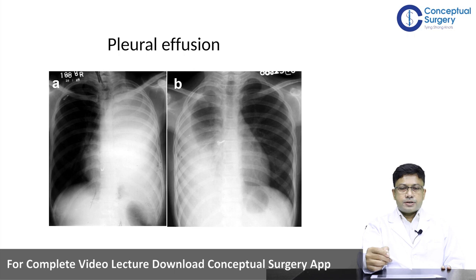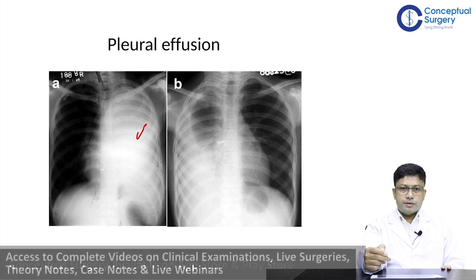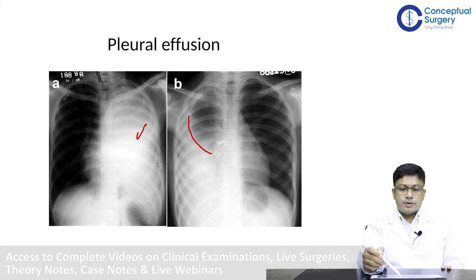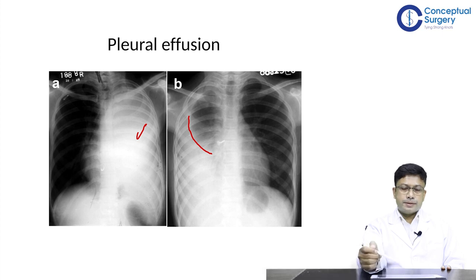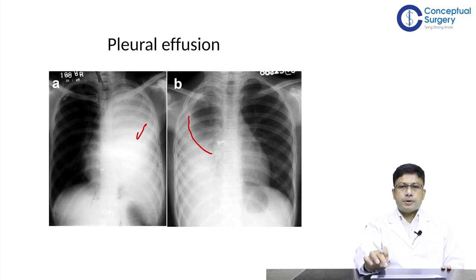This is a PA projection of two patients where you can see a completely opaque left hemithorax, seen in massive pleural effusions completely obliterating the pleural cavity. Figure B shows another patient's x-ray with a curvilinear upper border of a pleural effusion on the right side. In cases of complete opacification of one hemithorax, if one is doubtful about the presence of fluid, it is good practice to carry out an ultrasound to evaluate the nature of fluid collections in the pleural cavity.